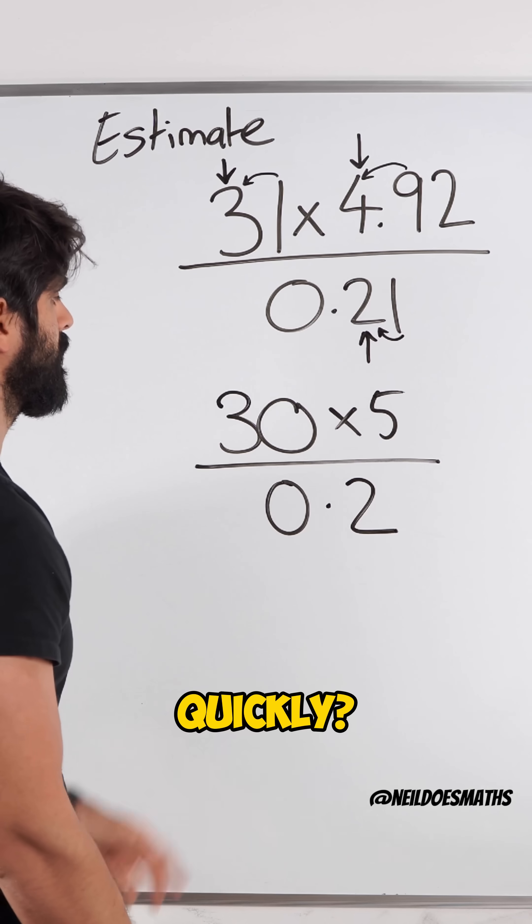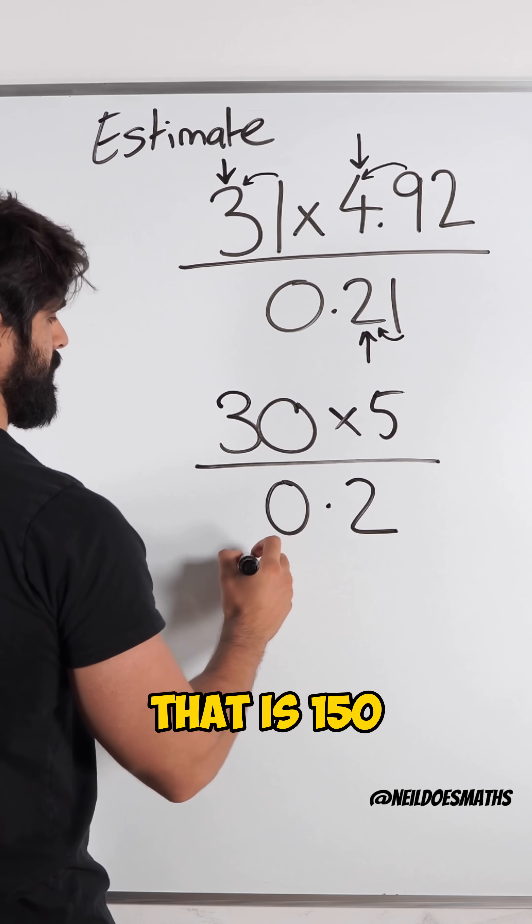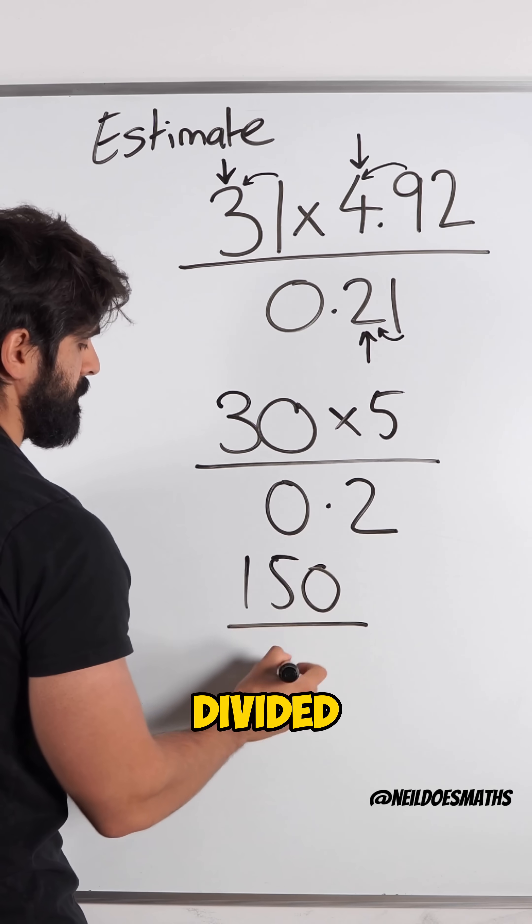How do you do this calculation super quickly? Well we can multiply the top. That is 150 divided by 0.2.